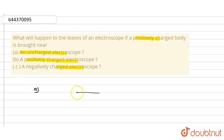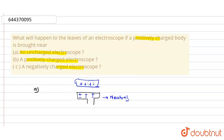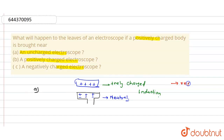Consider this uncharged electroscope — it has both positive and negative charges, so it is neutral. When a positively charged body is brought near the neutral electroscope, due to induction there will be a positive charge induced on the leaves, so the leaves repel each other and diverge.